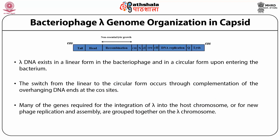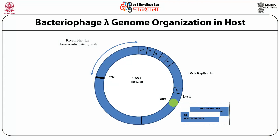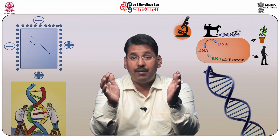Bacteriophage lambda genome organization in capsid: lambda DNA exists in a linear form in the bacteriophage and in a circular form upon entering the bacterium. The switch from linear to circular form occurs through complementation of the overhanging DNA ends at the cos sites. Many of the genes required for integration of lambda into the host chromosome, or for new phage replication and assembly, are grouped together on the lambda chromosome. After entering in circular form, the lambda starts replication in a rolling circle manner. In the figure, the cos site is shown with its complementary sequences.